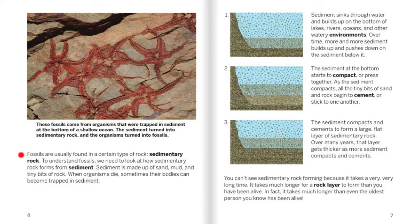Fossils are usually found in sedimentary rock. To understand fossils, we need to look at how sedimentary rock forms from sediment. Sediment is made up of sand, mud, and tiny bits of rock. When organisms die, sometimes their bodies can become trapped in sediment. Sediment sinks through water and builds up on the bottom of lakes, rivers, oceans, and other water environments. Over time, more and more sediment builds up and pushes down on the sediment below it.